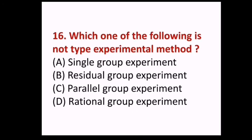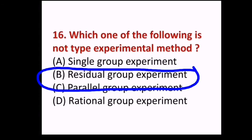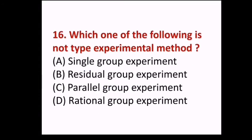Next question: Which one of the following is not a type of experimental method? (A) Single group experiment, (B) residual group experiment, (C) parallel group experiment, (D) rational group experiment. Answer B, residual group experiment.